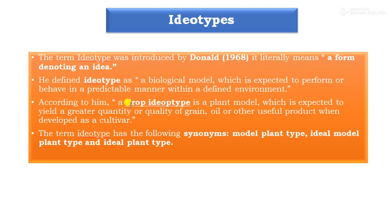According to Donald, crop ideotype or plant ideotype is the plant model which can be expected to yield a greater quantity or quality of grain, oil, or other useful products when developed as a cultivar. The crop ideotype is the plant model developed to increase quality as well as quantity of grain, seed, oil and other products cultivated in a definite environment. The synonyms of the term ideotype are: model plant type or ideal plant type.